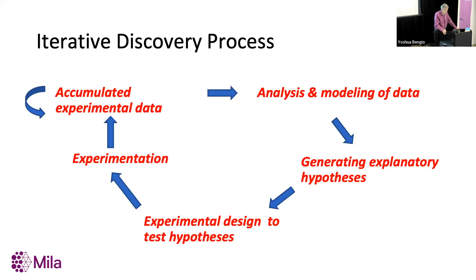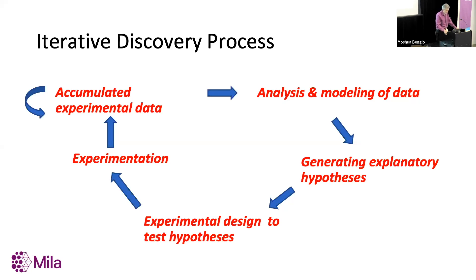The kind of scientific iterative discovery process that we want to throw machine learning into is like this: at any moment we have some data accumulated from a number of experiments. Think about drug discovery — maybe we've tried a bunch of drugs or experimented with different interventions on a cancer cell. It doesn't have to be medically related; it could be physics, chemistry, or biology. Then we take that data and we analyze it — we want to use machine learning to build models of that data to understand it.